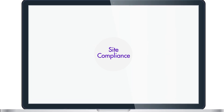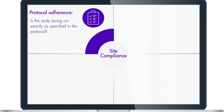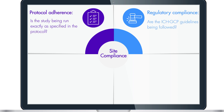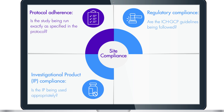When you check for site compliance, you are checking for protocol adherence: is the study being run exactly as specified in the protocol? Regulatory compliance: are the ICH GCP guidelines being followed? Are the necessary legal and regulatory documents correct, complete, and filed? IP compliance: is the investigational product being administered to subjects in the prescribed doses? Are subjects provided with necessary information regarding the IP? Is the IP being stored securely with restricted access and under appropriate conditions as specified in the protocol?